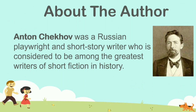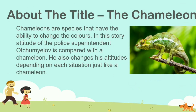Before I begin with the summary, let me tell you something about the title. The title of the story is 'The Chameleon.' As you know, chameleons are a species that have the ability to change colors. In the story, the attitude of the police superintendent Ocha Mylov is compared with a chameleon, as he also changes his attributes depending on each situation, just like a chameleon.